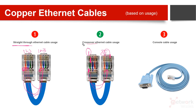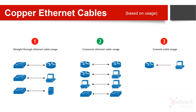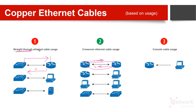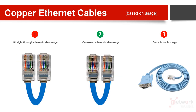This is called a crossover cable because when two similar devices are connected, both cannot transmit on the same pin simultaneously — that would cause a collision. By crossing some pins, one device transmits on pin one while the other transmits on pin three, avoiding collision. With a straight-through cable, different devices like a switch and a router already negotiate their transmit and receive pins by default, so no crossing is needed.